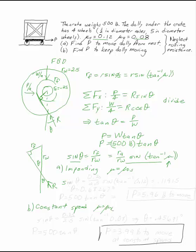Sin theta is ra is 0.25 over 2.5, sine tan inverse of 0.12 where mu equals mu s. This gives you 0.11915. Theta is 0.68267 degrees. And then P, which is 500 tan theta, gives you P equals 5.96 pounds to move. That's the answer to our first question.